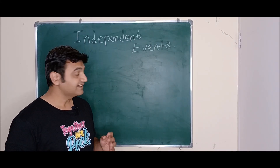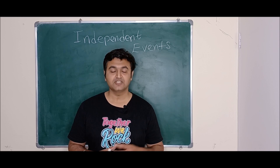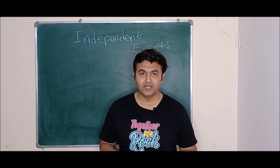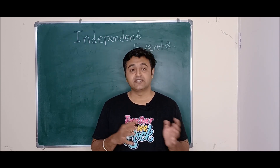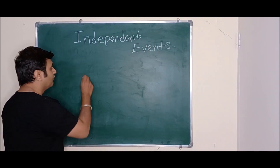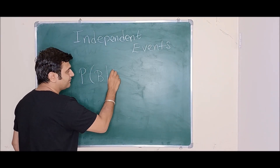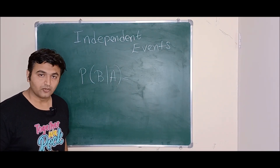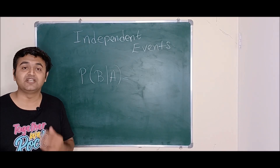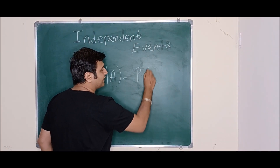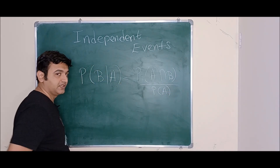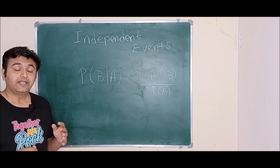Welcome back. In the last lecture we talked about conditional probability and I gave you a motivation on why one should study it. In continuation with conditional probability, the next concept is independent events. If you recall, the concept of conditional probability: suppose you have two events A and B, then the probability of B given that event A has already occurred is given by the probability of the intersection of A and B upon the probability of A.